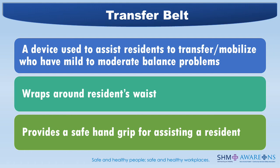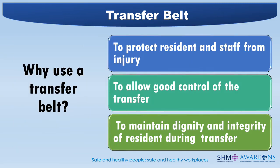A transfer belt is a device used to assist residents to transfer or mobilize those who have mild to moderate balance problems. The transfer belt wraps around a resident's waist and provides staff with a safe handgrip for assisting a resident. It's important to remember the belt is not intended to be a lifting tool. If you see the belt is riding up in the back, adjust it to fit snugly, and if this continues, a reassessment is required as you may be lifting. Use a transfer belt to protect the resident and staff from injury, to allow good control of the transfer, and to maintain dignity and integrity of the resident during the transfer.